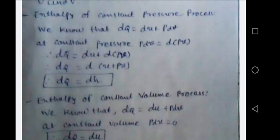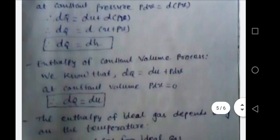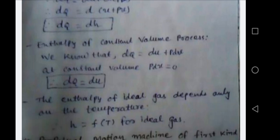For a constant volume process, dQ equals dU plus p dV. But for constant volume there is no change in volume, so p dV becomes zero, giving dQ equals dU. Therefore, for a constant volume process, rate of change of heat equals rate of change of internal energy. The enthalpy of an ideal gas depends only on temperature — h is a function of T — same as for internal energy, enthalpy is also a function of temperature for ideal gases.